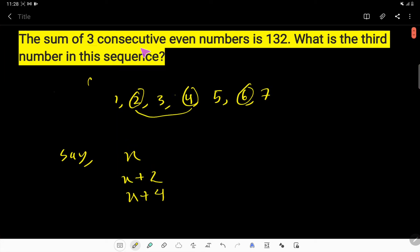Look, the sum of three consecutive even numbers is 132. That is, if you add x plus x plus two plus x plus four, then according to the condition of this math, we have to write 132.